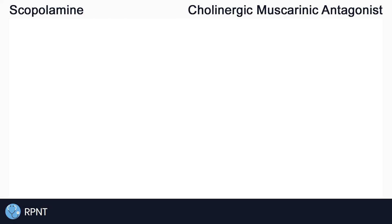Hi everyone, this is Ryan from rpnt.ca and today we're going to be talking about the drug scopolamine. Scopolamine belongs to the cholinergic muscarinic antagonist drug classification. To get a good understanding of how the drug works, let's break down the words in that classification.